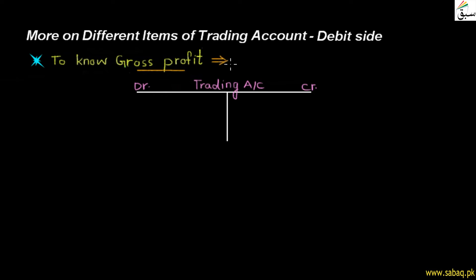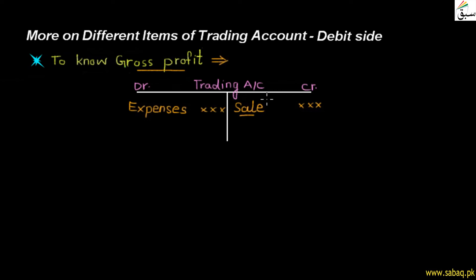Gross profit is this: our business sales — we call the main business product we sell, or the service we provide — the amount we receive. In the trading account, we write these sales, and from that we minus the expenses we have to pay for those sales. If the sales amount is more and expenses are less, then gross profit will come.